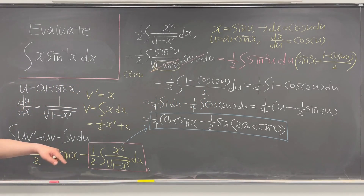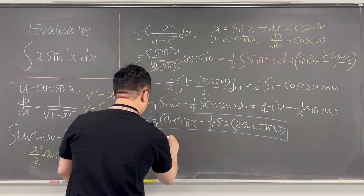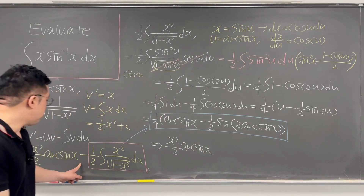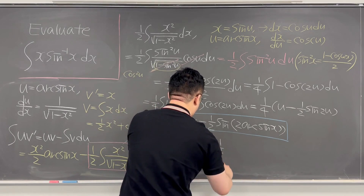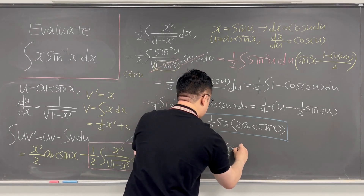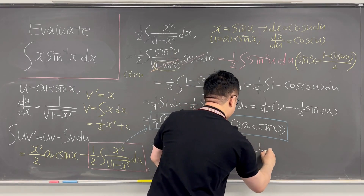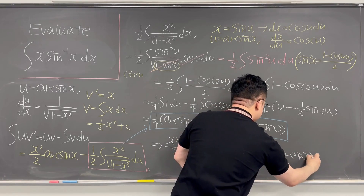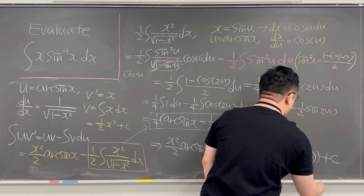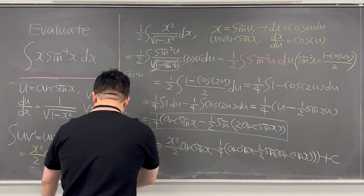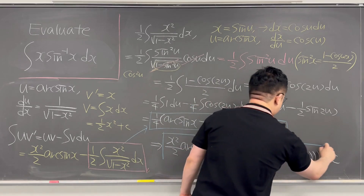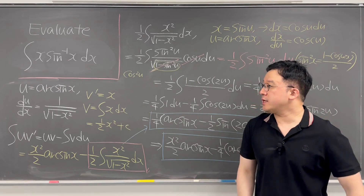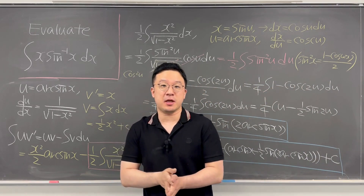So your final answer has to be x squared over 2 times arcsin(x), minus 1/4 times the quantity arcsin(x) minus 1/2 sine of 2·arcsin(x), plus C — because we worked on an indefinite integral. Okay, pretty interesting viewer-suggested integral. I'll be back with more videos and more questions like this sometime soon.